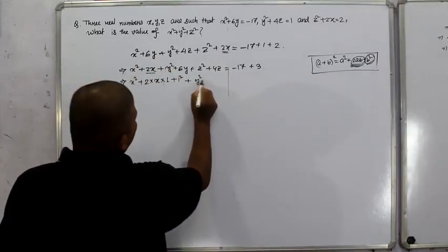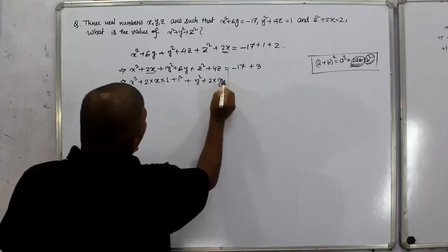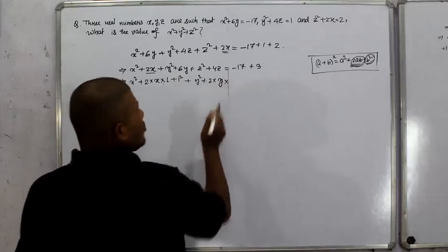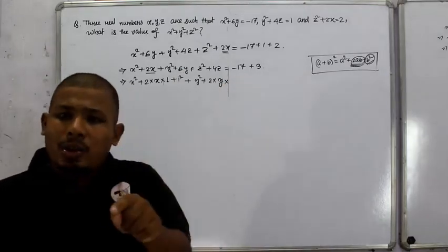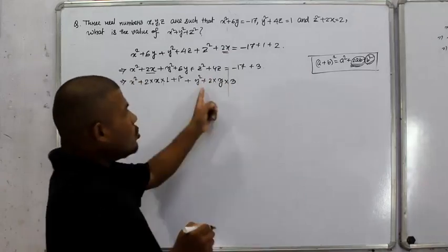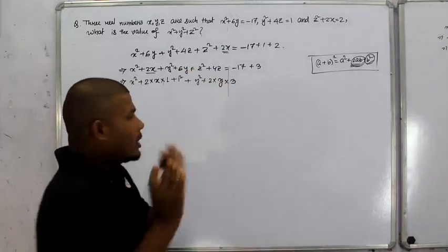For the y terms, we have 6y. Since 6y equals 2 times y times 3, this means b equals 3. So we get y plus 3 squared, which includes 3 squared equals 9.